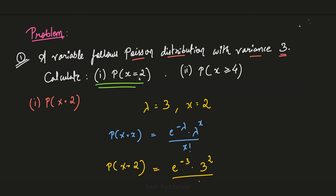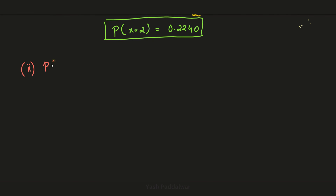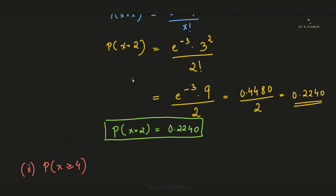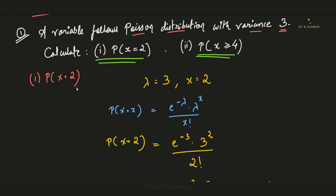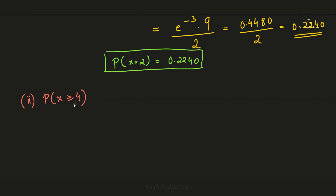Now let's jump into the next part: find the probability at x greater than or equal to 4. Unlike the previous part where x had a precise value of 2, here x can be 4, 5, 6, 7, or any value up to infinity, making it impossible to calculate each individually. So we need to think differently and reverse the condition.